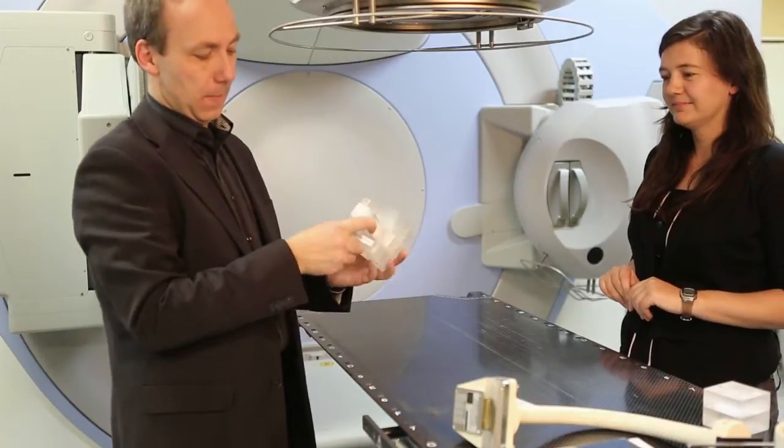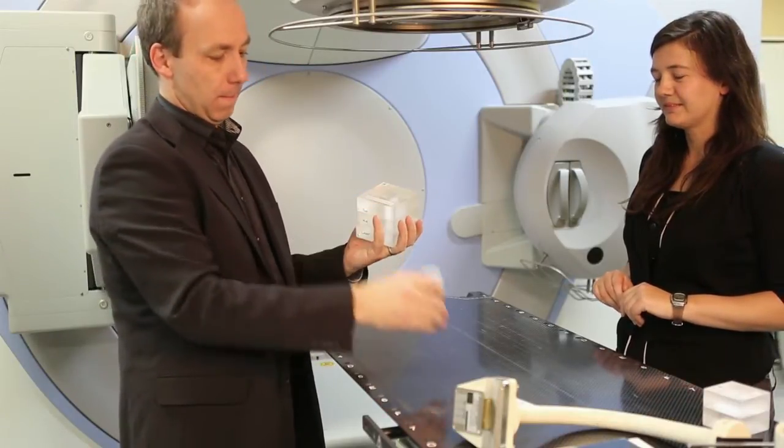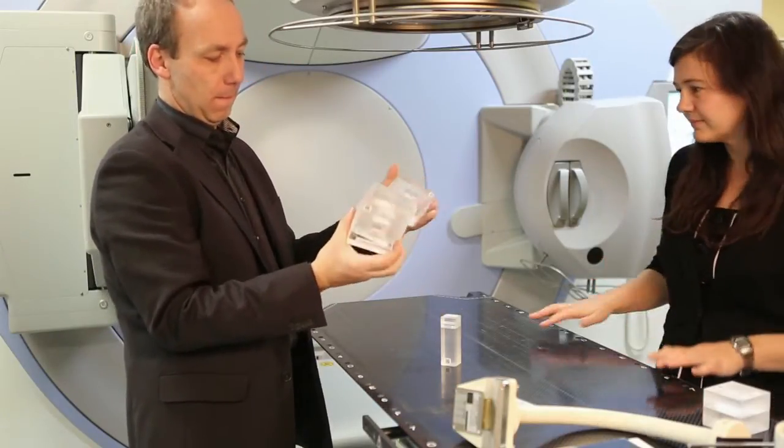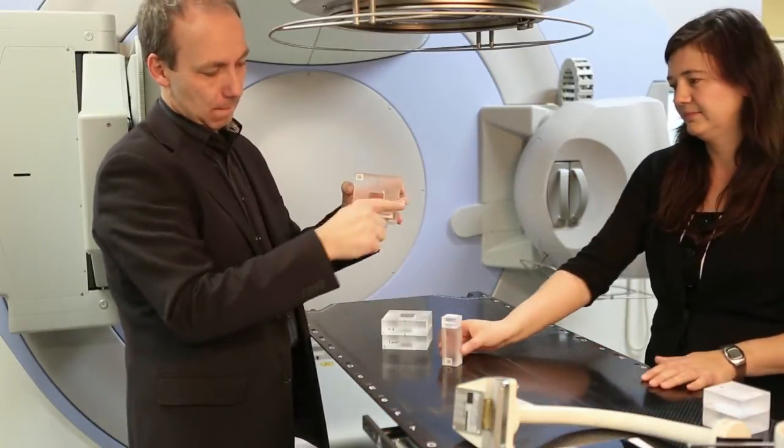The electron phantom comes in four pieces: the electron plug and three square rings. The rings are identical, except for the upper ring, which has lines inscribed for alignment with the crosshair.